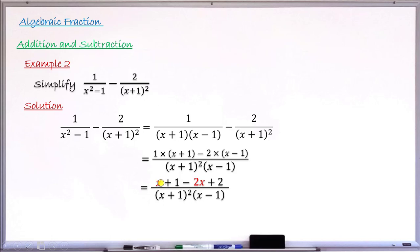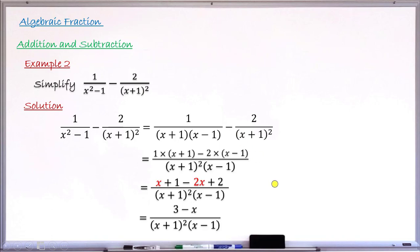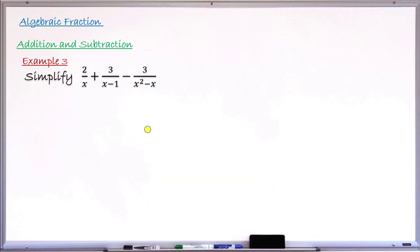Collecting like terms: x−2x = −x, and 1+2 = 3, giving 3−x all over (x+1)²(x−1). This is the final result of the subtraction. Let's take one more example.